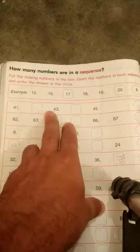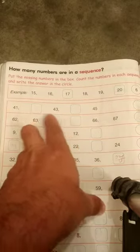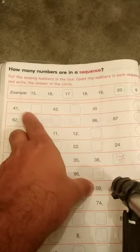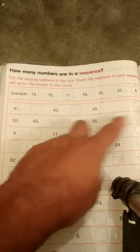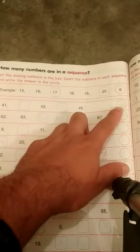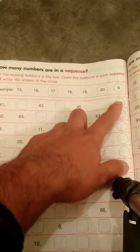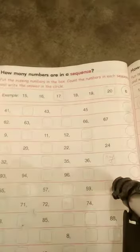You have to fill the numbers in the box, and then count the total. Here is the circle. First, we have an example, so let's check.